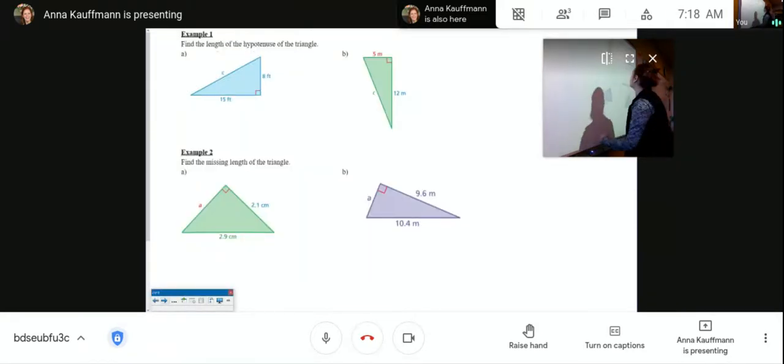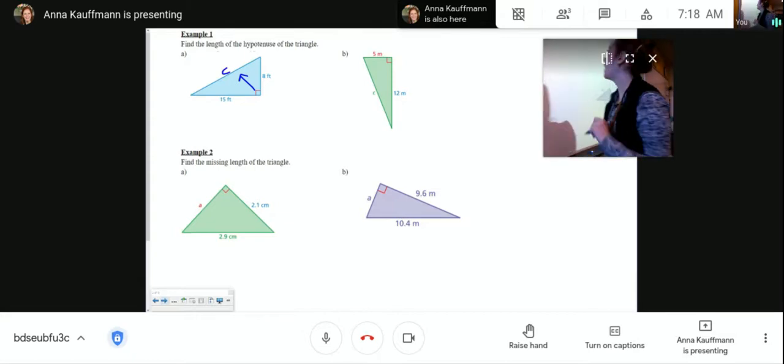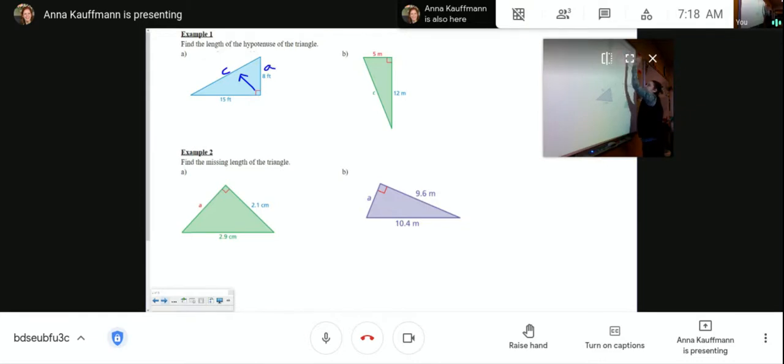So now let's try some examples. Find the length of the hypotenuse of the triangle. First thing you should label is the side that's opposite of the hypotenuse, which is C, and they have labeled it with a C for us. Now 8 and 15 can be A or B in any order, so let's make 8 be A and 15 be B. So now following our pattern, we do 8 squared plus 15 squared equals C squared.